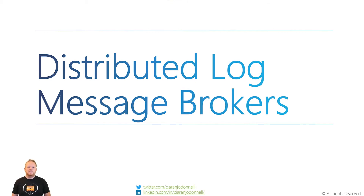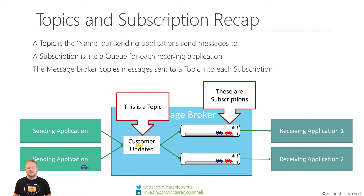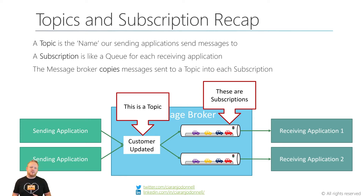Hey everyone, welcome to another video. Today we're talking about distributed log style message brokers like Azure Event Hubs and Apache Kafka. Before we dive in, let's just remember what we talked about with topics and subscriptions in our previous video. The topic is the name that our sending application sends messages to on our message broker, and a subscription is like a queue for each receiving application that wants to receive those messages. Whenever we send a message to a topic, the message broker will get all the subscriptions for that topic and copy the message into each of those subscriptions.